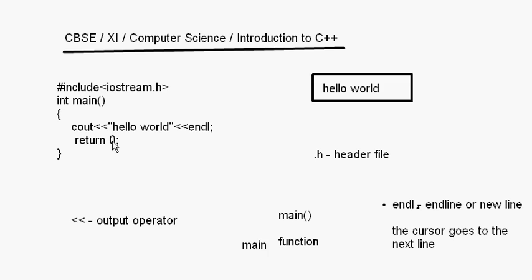After return 0, that is the end of the program, and then you have to close the main method with the closing curly bracket, in line with the opening curly bracket. When we write statements inside curly brackets we give some space and write them, and whatever statements you write inside the curly brackets should be in the same column. This is called indentation — if the program is properly indented it becomes more understandable and readable.